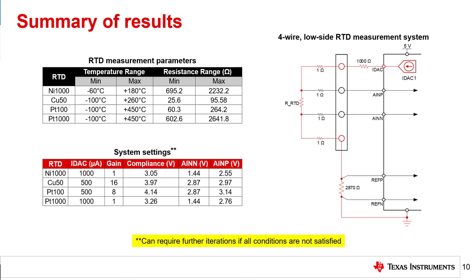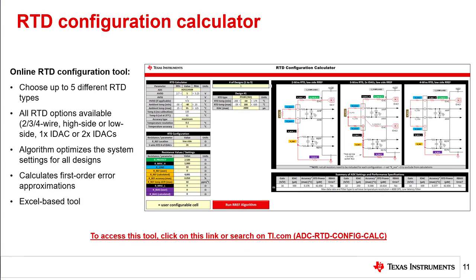While this may have been a complicated process, TI has developed a tool to help. The RTD configuration calculator is an online tool that automates the process presented in this Precision Labs module. This online tool allows the user to choose up to five different RTD types in any of the eight common RTD configurations. An algorithm can be run that optimizes the system settings for all designs, or it is possible to manually enter information to see if certain combinations of settings are valid. The RTD configuration tool also calculates first-order error approximations using the information presented in a previous Precision Labs module on error sources in RTD measurement systems.